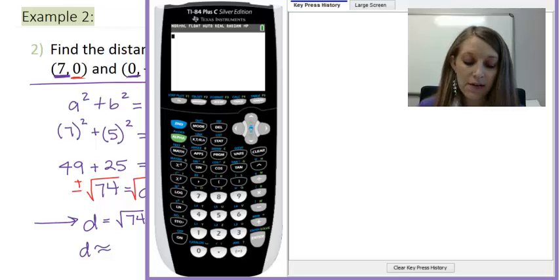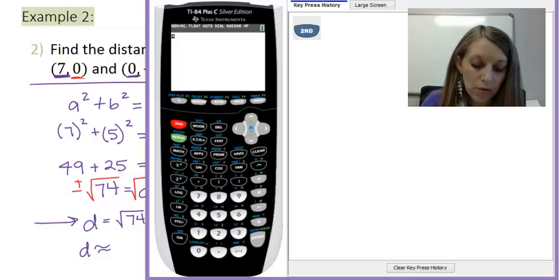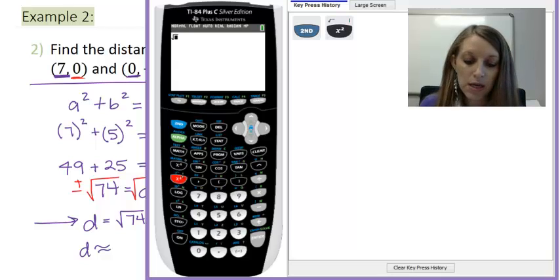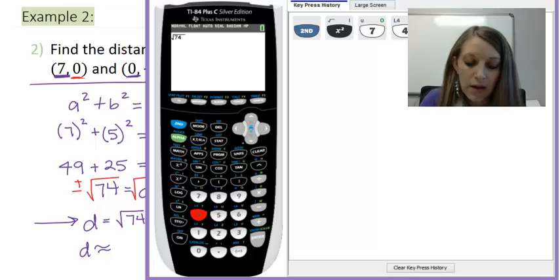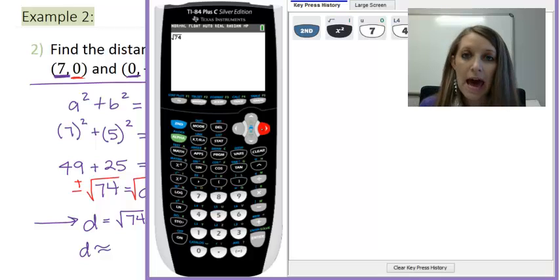Type in √74. My square root is above the square button. So, I hit the second in the square root. And then I type in 74. Push over to get out of my square root. If you have an older version, then you'll just put that 74 in parentheses. When I push enter, that gives me my approximation.